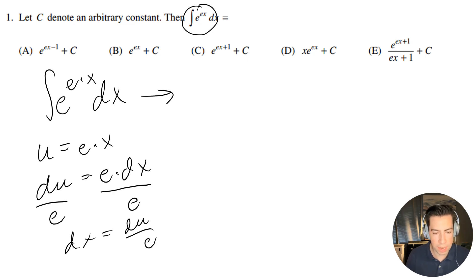Okay, so now whenever I rewrite this, I'm going to have the integral of e to the u divided by e du. And if I do some algebra here in exponent rule, I'm going to have the integral of e to the u minus 1 du.